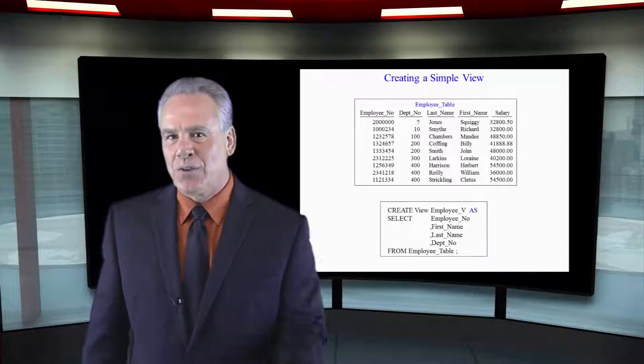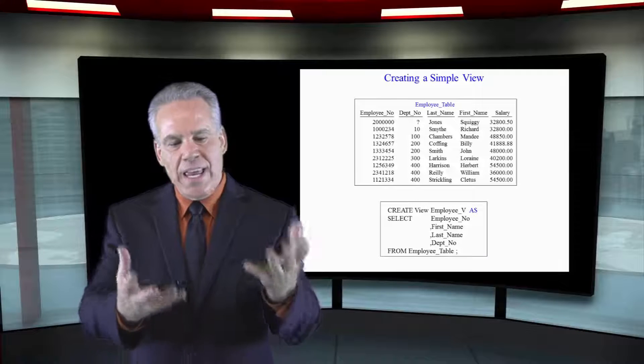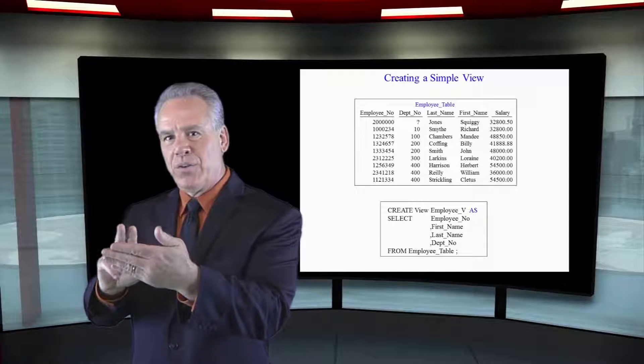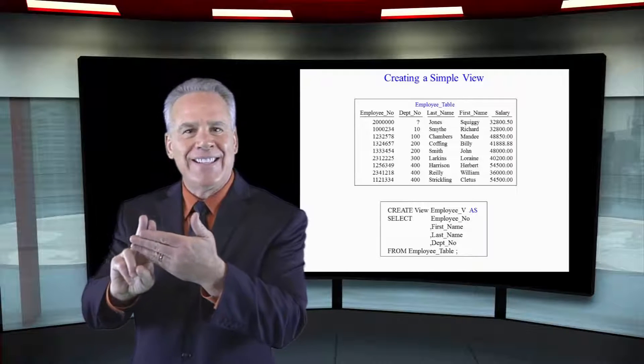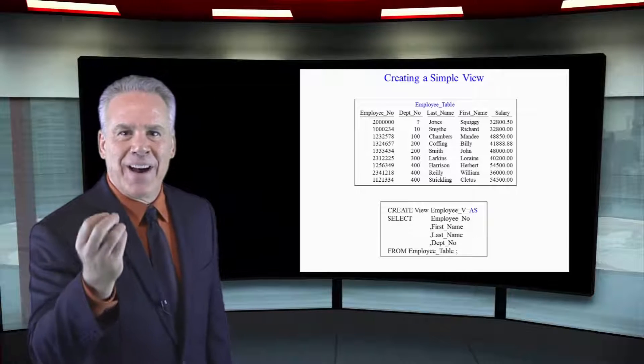So what we're going to do is create a view. Here's the syntax. Create view, I called it employee_V, as, select employee number, first name, last name, department, from employee table. Now, when people access and query the view, it didn't double the data. It just acts as a filter that says they can't see the salary, and that's the idea behind a view.